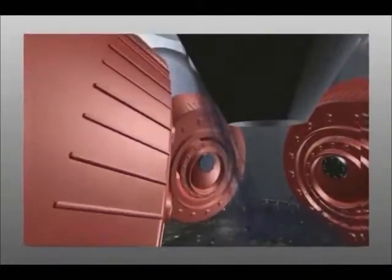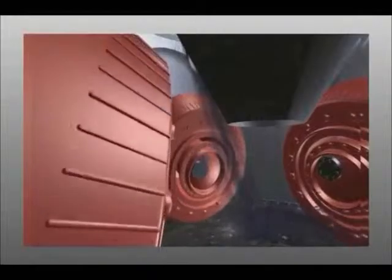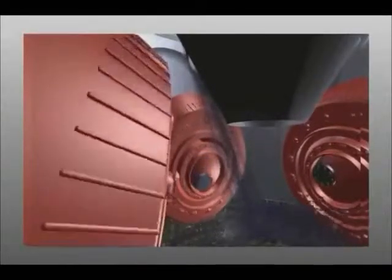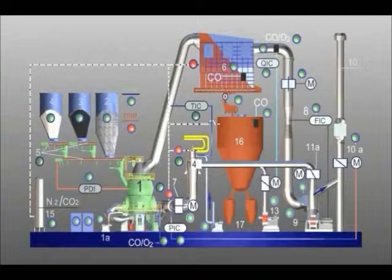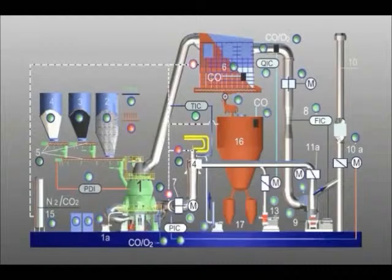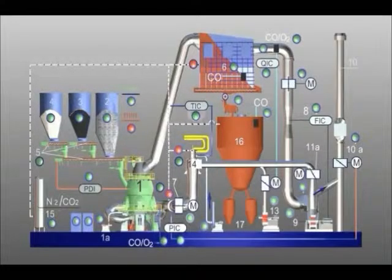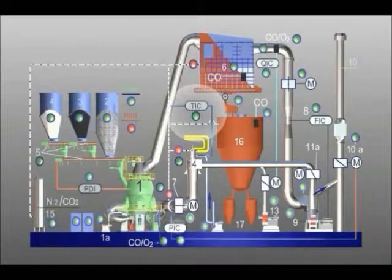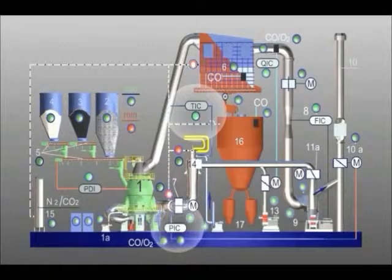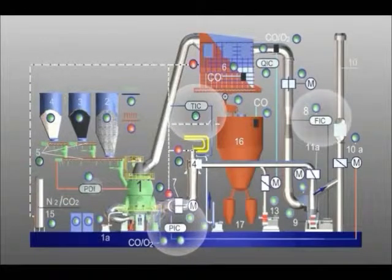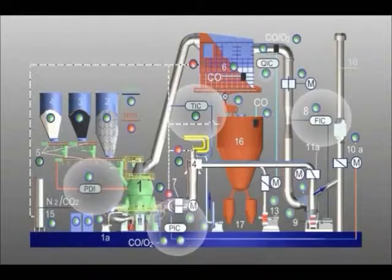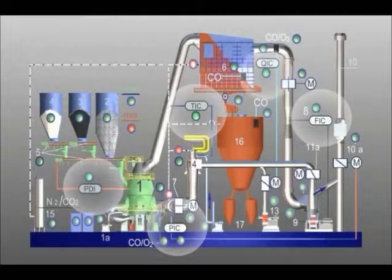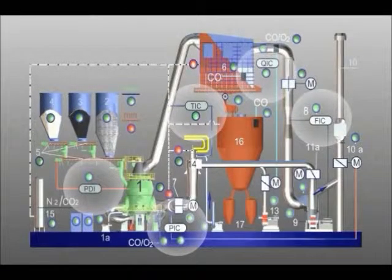The material feed is set to the minimum throughput rate of 40 percent. All controllers and the associated controlled systems are set to automatic: TIC after mill, PIC before mill, FIC after filter, PDI mill differential pressure, QIC oxygen control after filter.